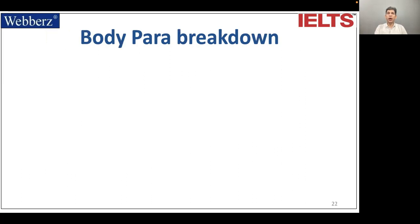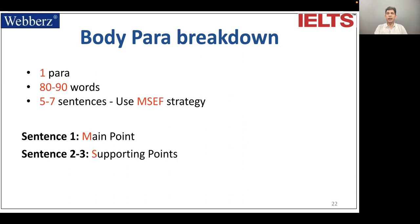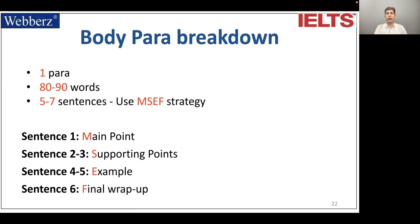Now the body breakdown: one paragraph, 80 to 90 words, five to seven sentences using the MSEF strategy. Sentence one will be the main point. Sentences two and three are going to be supporting points. Sentences four and five can be an example. And sentence six will be the final wrap-up.